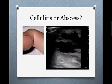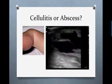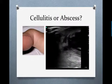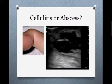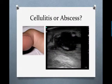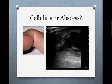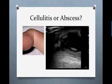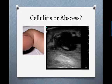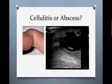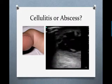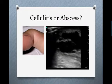Same patient, but with different ultrasound results here on the right. You can see a complex fluid collection with irregular borders — this is consistent with an abscess. This patient would require an incision and drainage. Ultrasound can help you locate the best place to make your incision so that you don't have to make multiple incisions and you have a higher first-time success rate when draining it.